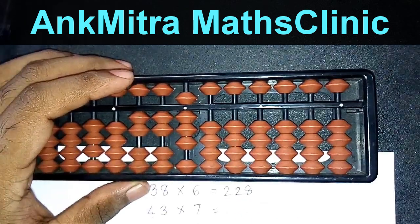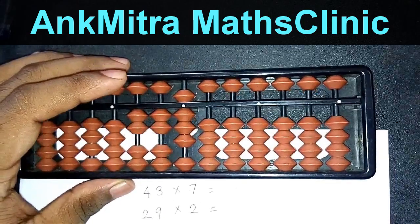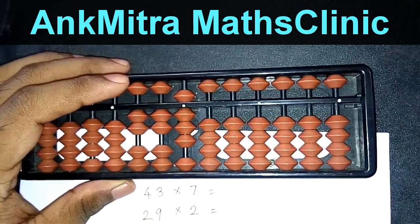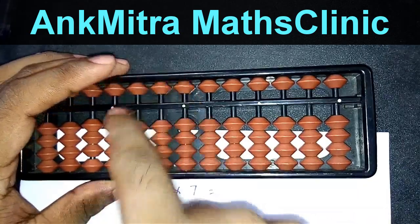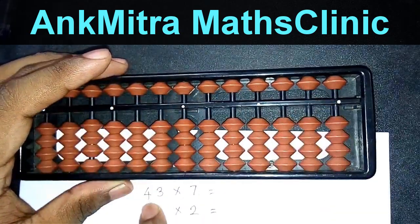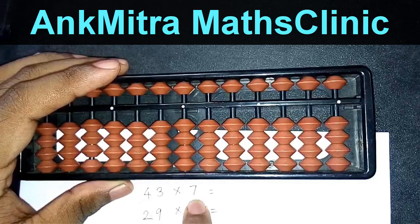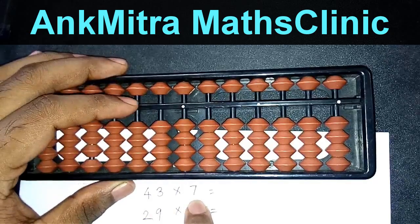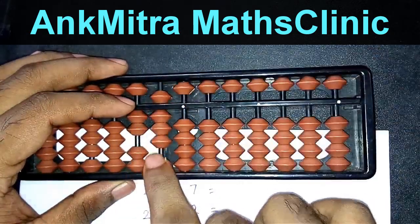Now let's go to the next number. It is 43 multiplied by 7. I'll first clear the abacus. Then I'll start with 4 sevens are 28. This 28 will be taken from the third rod. So it will be 2, 8 from the third rod.